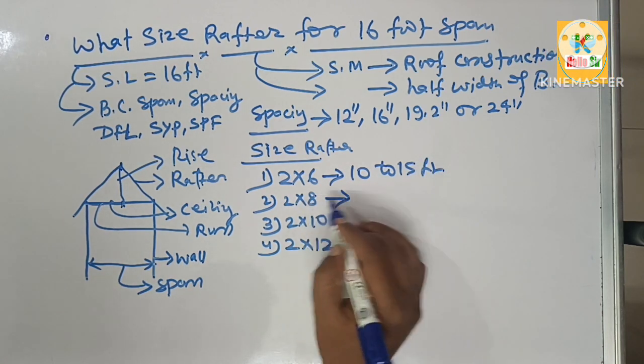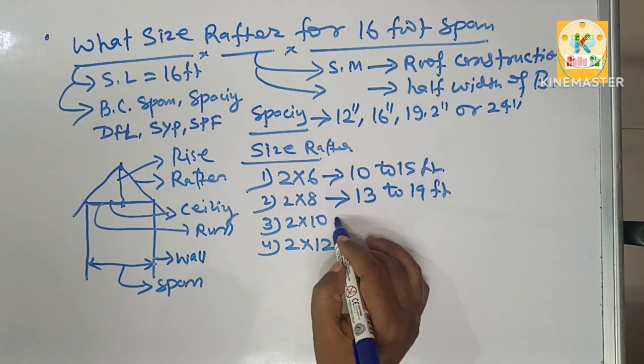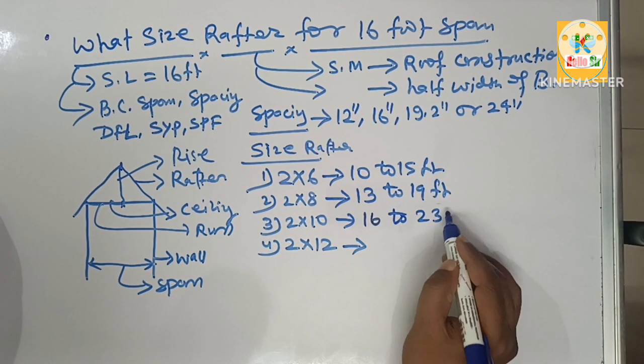A 2 by 8 lumber may span from 13 to 19 feet, and a 2 by 10 lumber may span from 17 to 23 feet.